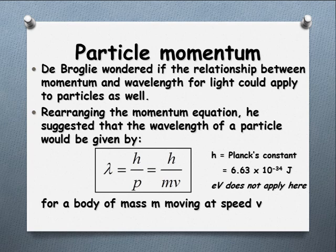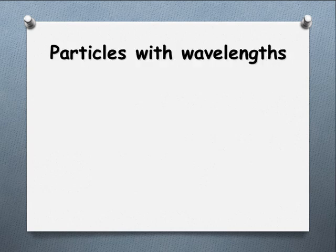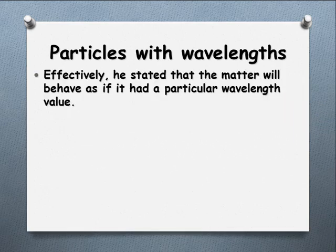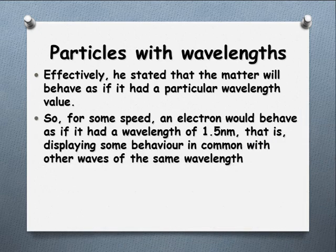Basically, what he's saying is particles might behave — or will behave — as if they have a particular value of wavelength. So if a particle is moving at some given speed, it will behave like a wave of a given wavelength. We will get some of these common features. It will do some things in common with waves and what we would expect of a given wavelength.